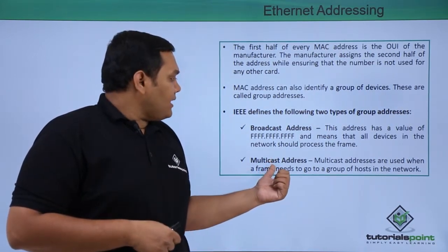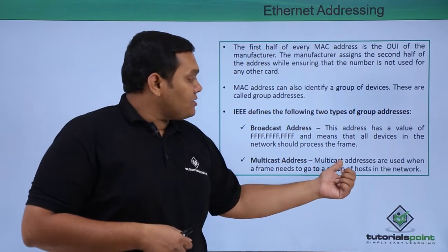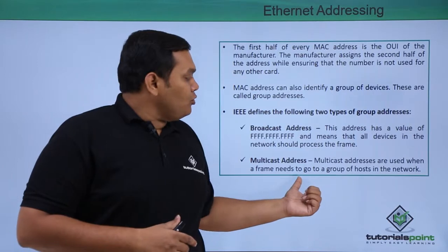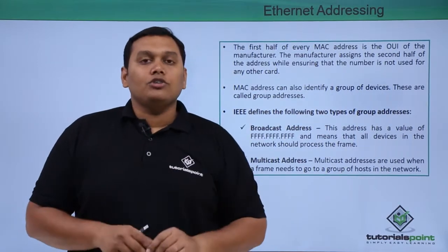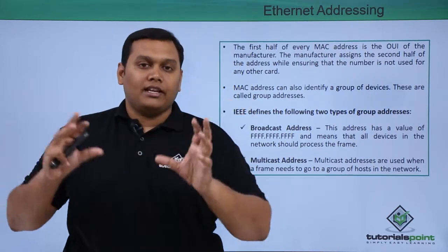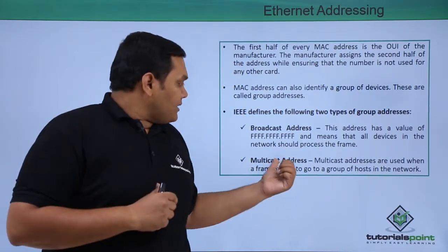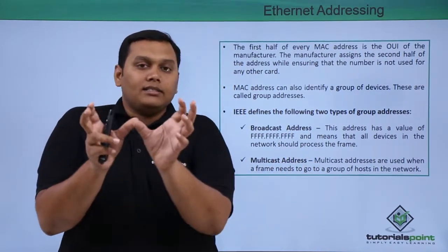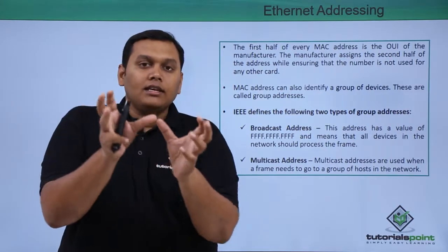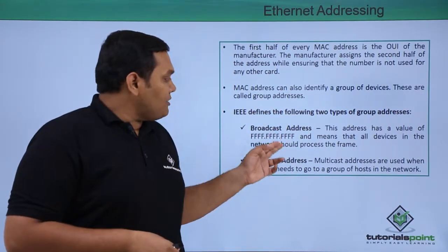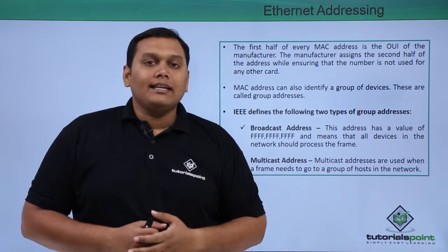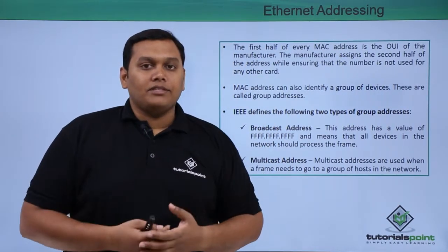Multicast addresses are used when the data or the frame needs to be sent to a group of hosts in a network. So broadcast means sending to all the hosts in the network, while a multicast address means it sends only to a group of hosts in the network. These are the classifications given by IEEE, and this is how Ethernet addressing takes place.